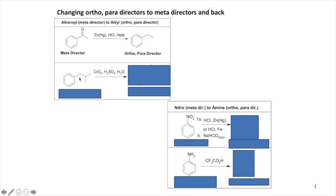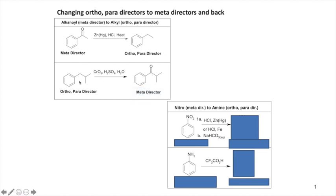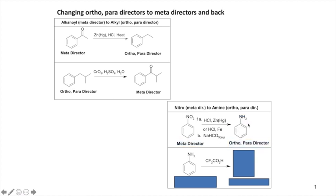You can reverse this: if you have an alkyl chain — an ortho/para director, weak activator — you can treat it with Jones oxidation to get the carbonyl back, making it a meta director again. I'll give you these four reactions on the exam like I gave you the periodic table, so you don't have to memorize them. Similarly, if you have a nitro group you can reduce it with HCl and iron — under acidic conditions the amine will be protonated, so add sodium bicarbonate to deprotonate it and convert from a meta director to an ortho/para director. Then you can oxidize the amine back to a nitro group to make it a meta director again.